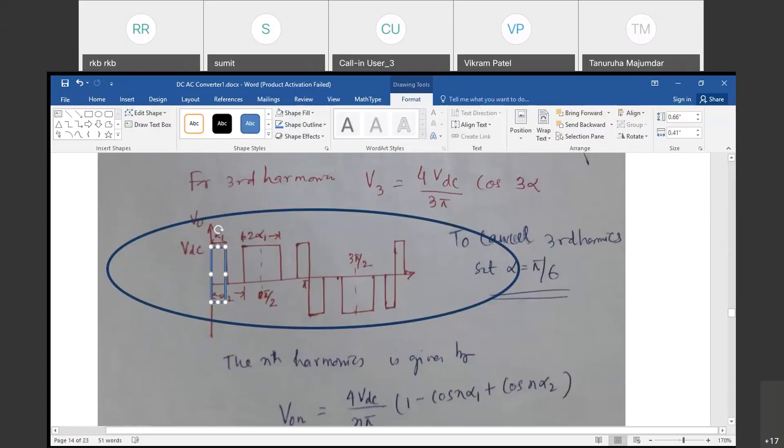And this pulse is α1 at 17.8 degrees. If you just create a pulse, a notch at that point, then it will eliminate the third and fifth harmony. Similarly, if you want to eliminate more number, you can do like that also.